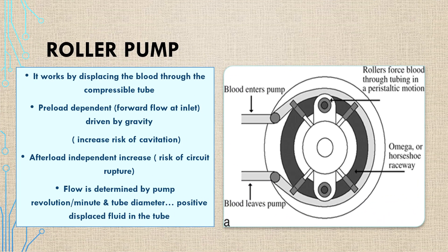The roller pump works by squeezing blood through compressible tubes; rollers force the blood through peristaltic motion to the other side. It is preload dependent, driven by gravity. As a result, decreased preload in hypovolemia or hemorrhage increases risk of cavitation. It is afterload independent, meaning there is risk of circuit rupture in case of hypertension. Flow is determined by pump revolutions per minute and tube diameter.